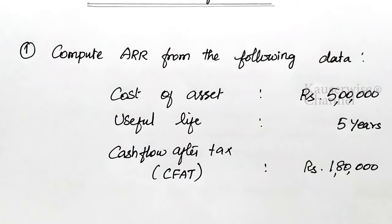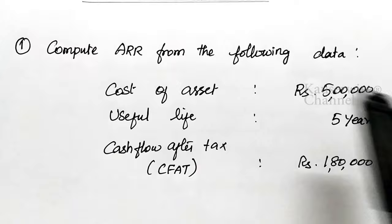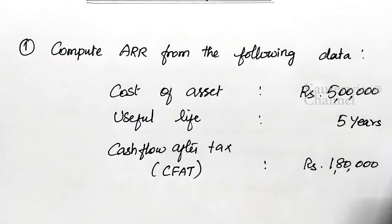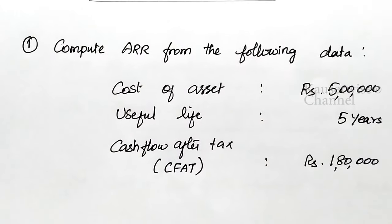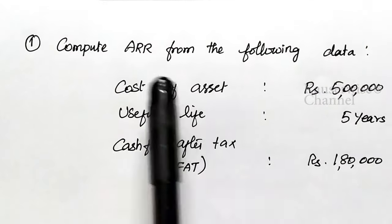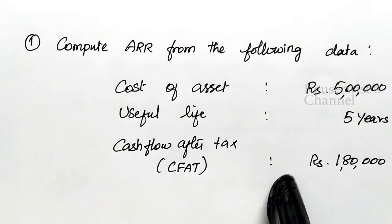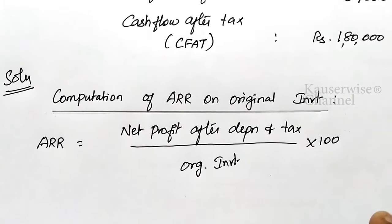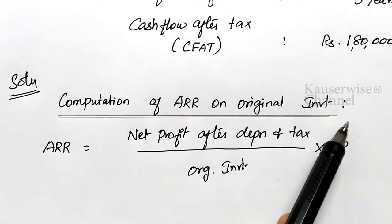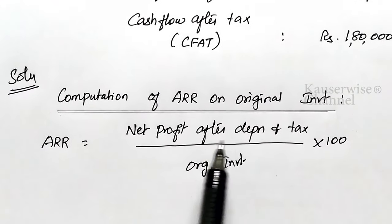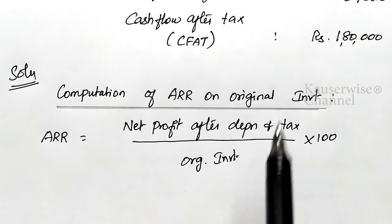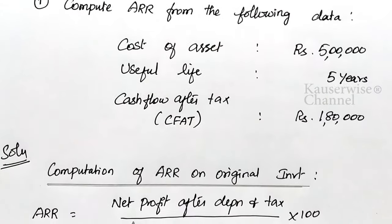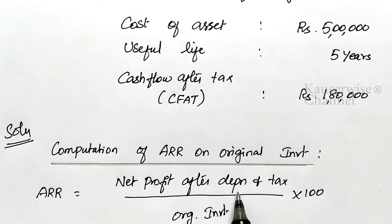In this problem they didn't mention ARR on original investment or ARR on average investment, so we are going to calculate ARR on both methods — on original investment as well as on average investment. Look at the formula for original investment: net profit after depreciation and tax divided by original investment, into 100. The original investment is 5 lakhs, and you have to take net profit after depreciation and tax.